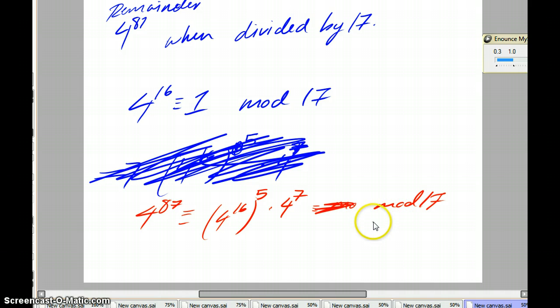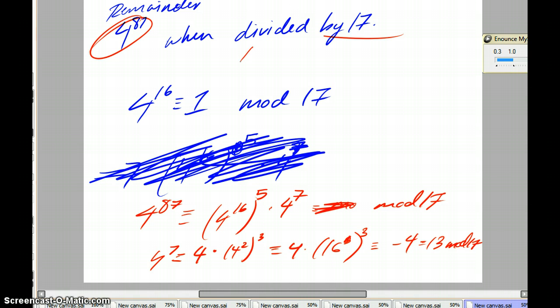4 to the 7th is actually easy to calculate, because we can just break this down into powers of 4 that can be verified computationally. Specifically, 4 to the 7th is congruent to 4 times 4 squared cubed, which is congruent to 4 times 16 cubed. 16 cubed, and 16 is minus 1 mod 17. So this is congruent to minus 4, or 13 mod 17, which shows that the remainder of this thing, when divided by 17, is 13. What a great result.